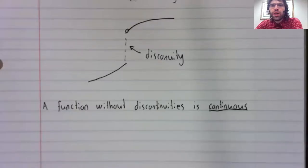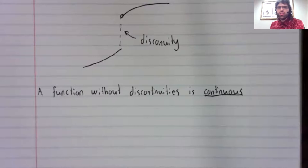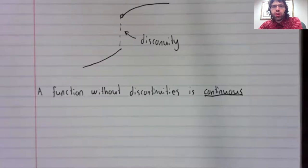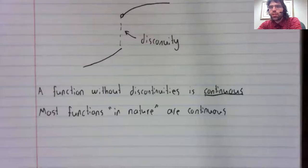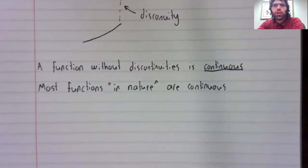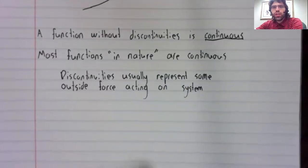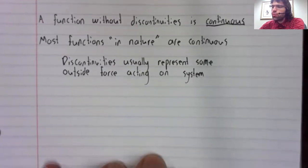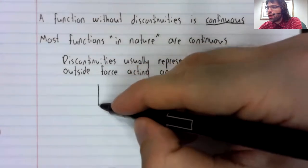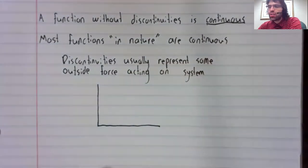And a function without discontinuities is called a continuous function. Most natural functions are continuous. Discontinuities in nature usually represent some kind of outside force acting on the system.